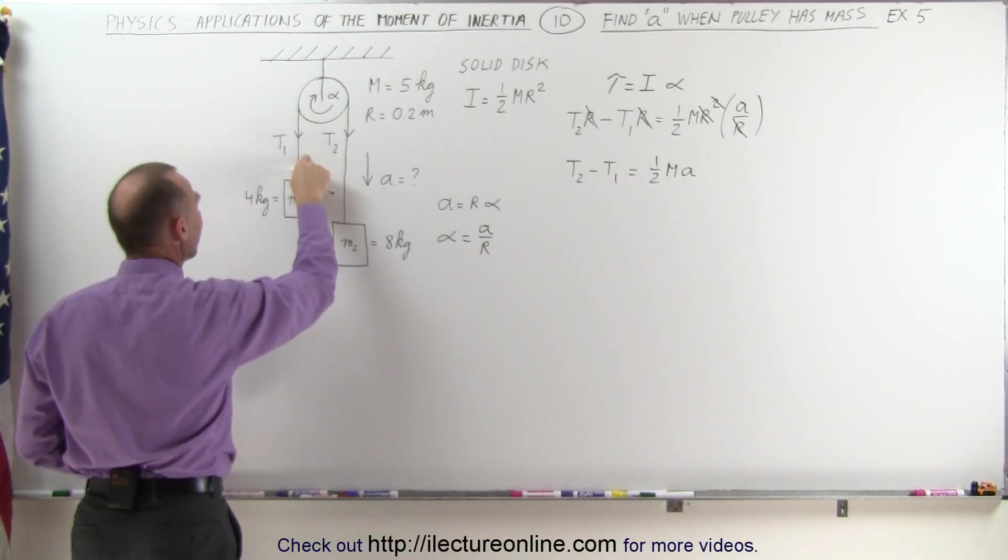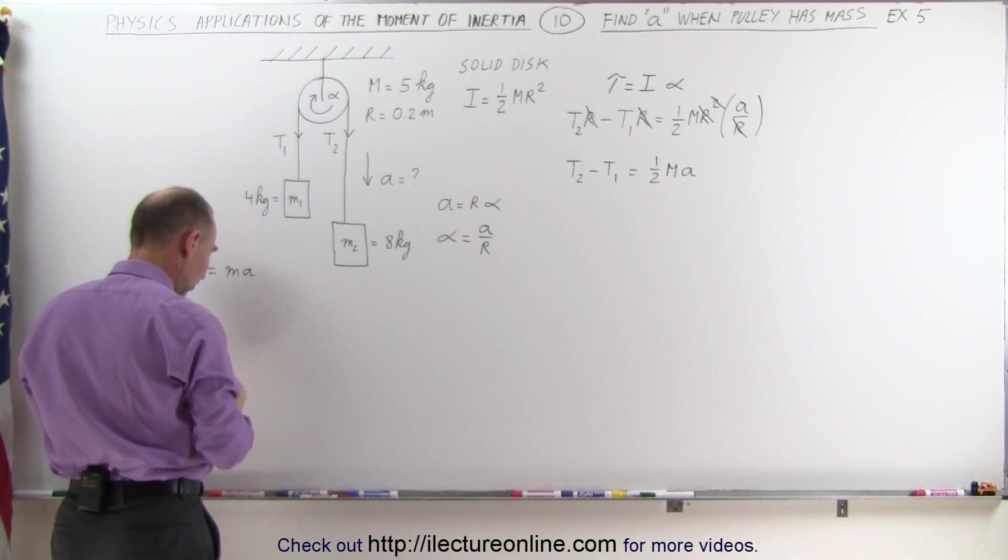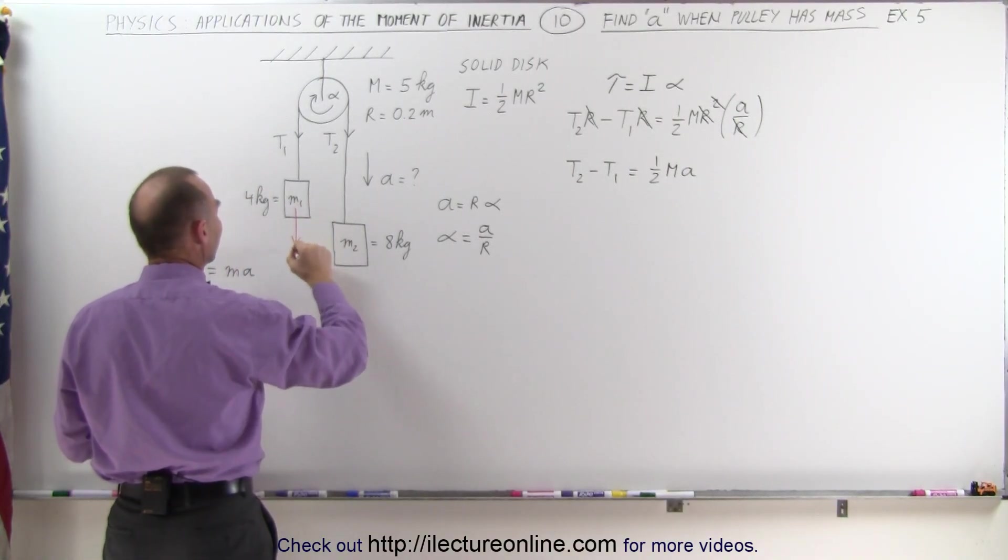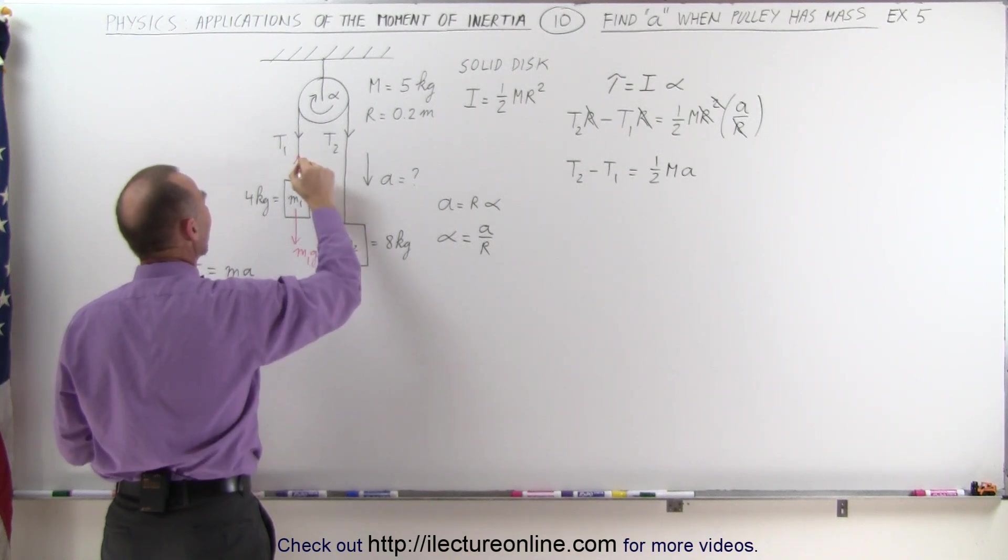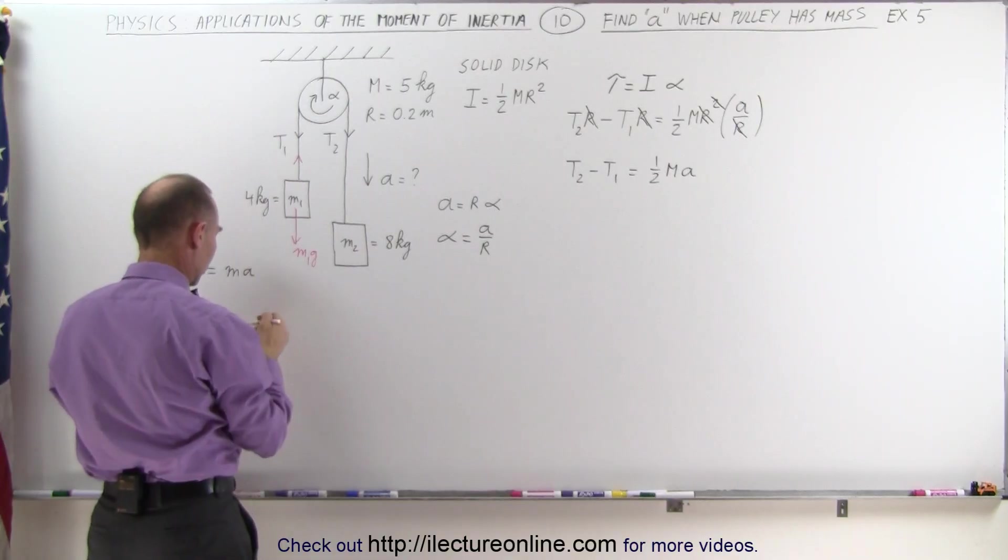Let's take a look at mass 1. We can say that F equals MA. And all the forces on mass 1, let's see here, we have a force in this direction caused by the force of gravity, M1G. And then we have T1 pulling upward. Relative to M1, T1 is pulling in an upward direction.